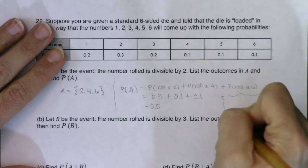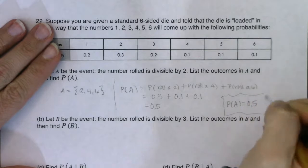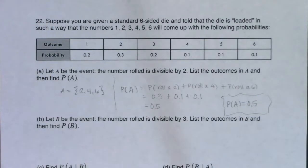So I'll just put off to the side here so we're aware that the probability that event A happens, it happens about 50 percent of the time. Okay.